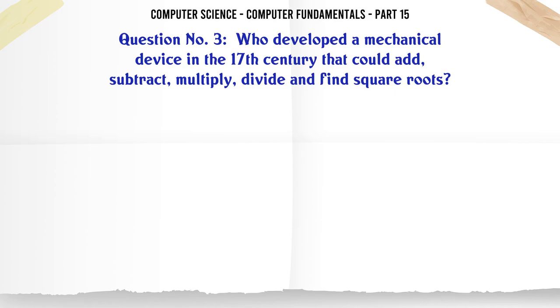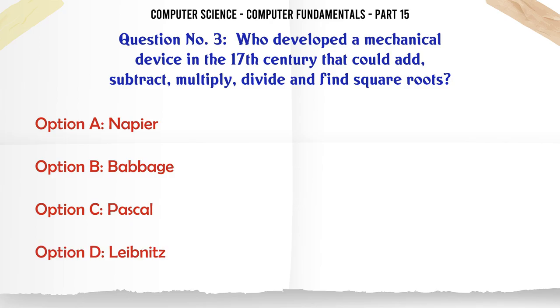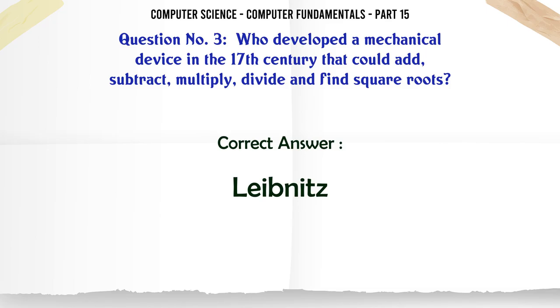Who developed a mechanical device in the 17th century that could add, subtract, multiply, divide and find square roots? A. Napier. B. Babbage. C. Pascal. D. Leibnitz. The correct answer is Leibnitz.